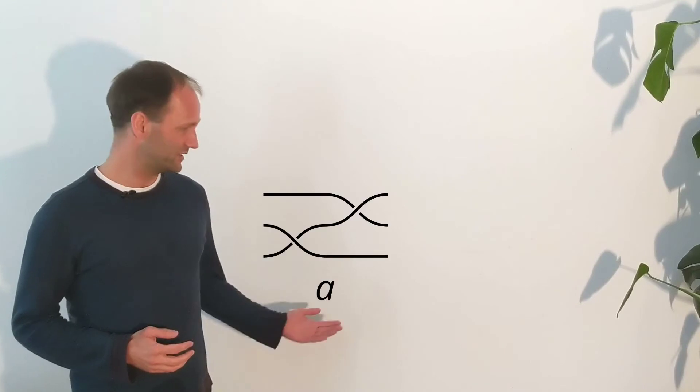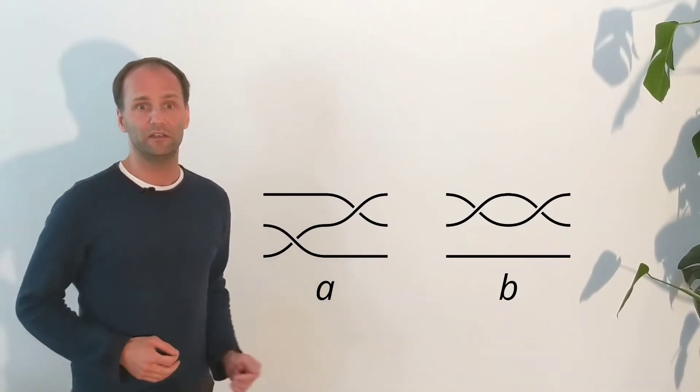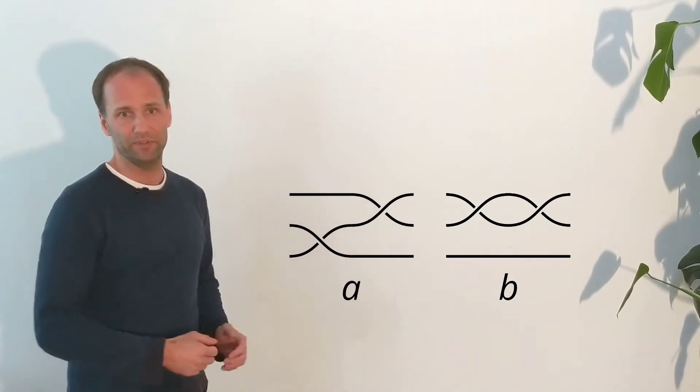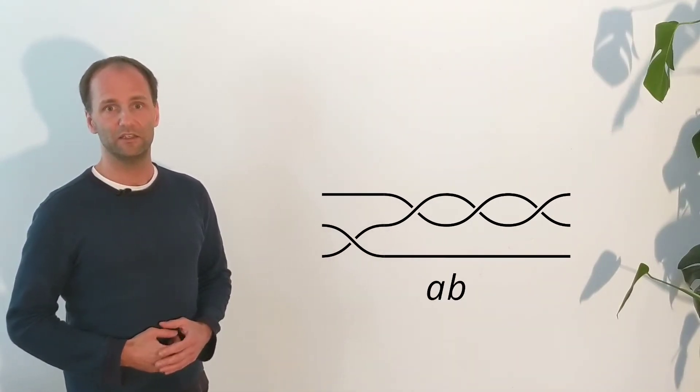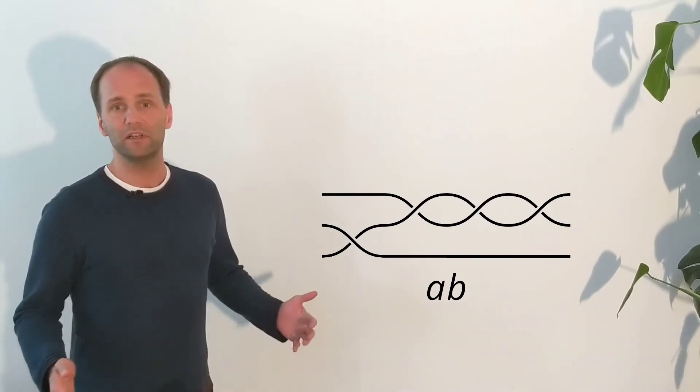For example, consider this braid, called A, and that one, called B. Then we can join A and B, like this, in order to get a new braid, which we call the product of A and B, or simply AB.